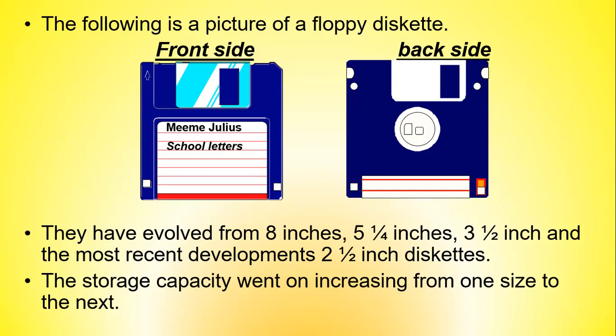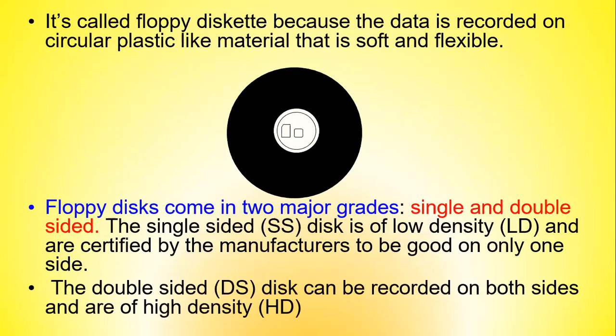Floppy diskettes evolved from eight inches to five-and-a-quarter to three-and-a-half inches, with the most recent development being about two-and-a-half inch diskettes, and storage capacity increased from one size to the next. They were called floppy diskettes because data was recorded on a soft, flexible circular plastic material. Floppy disks came in two major grades: single-sided (SS) of low density, certified good on only one side, and double-sided (DS) which could be recorded on both sides and were of high density.